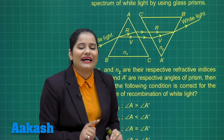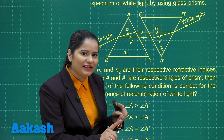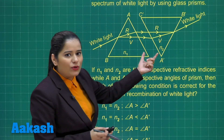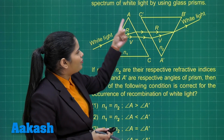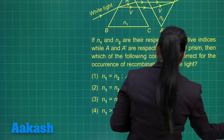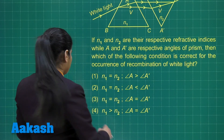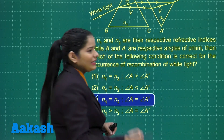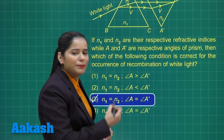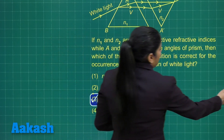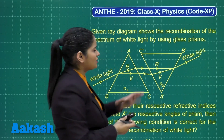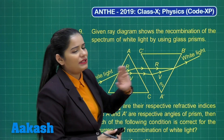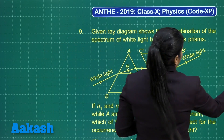Recombination of white light will occur by using identical and inverted prisms. Identical prisms will result when N1 equals N2 and when the angle of prism A equals angle A prime. Looking at the options, option number 3 is the correct option. When N1 equals N2 and angle A equals angle A prime, only then will these two prisms be identical and inverted, and hence the recombination of light will occur. I hope this question is also very clear to you.